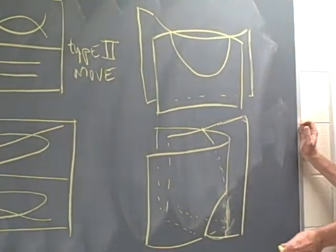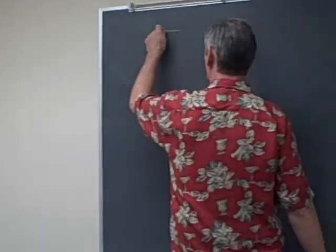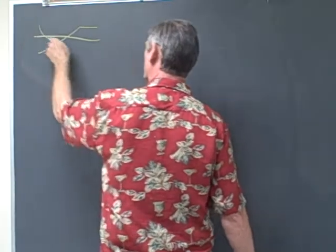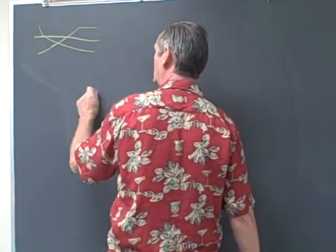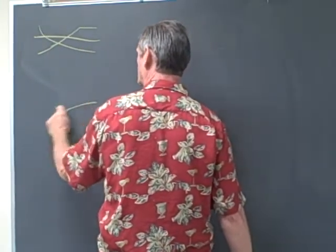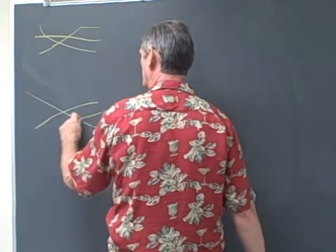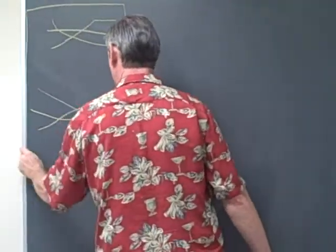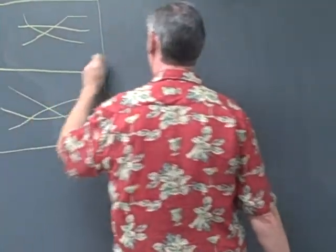And we have a type 3 move in which we start out with three pairs of arcs crossing like this and the resulting crossing being like this. And this is called a type 3 move.